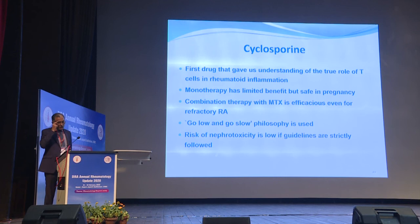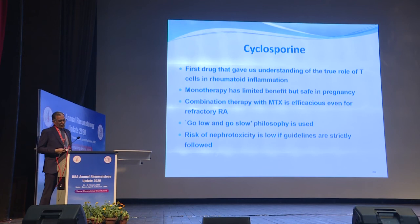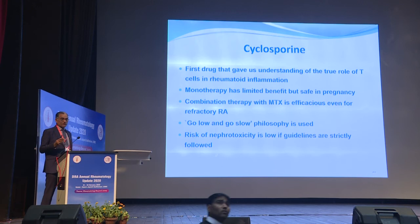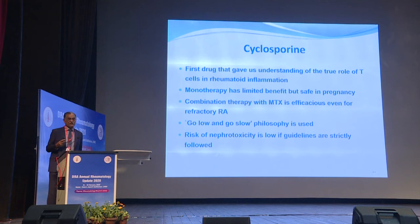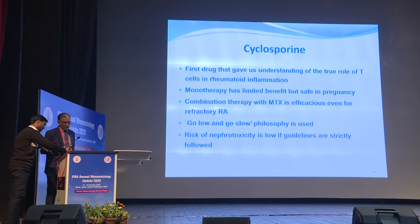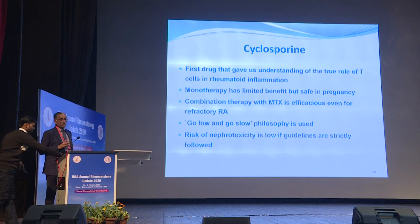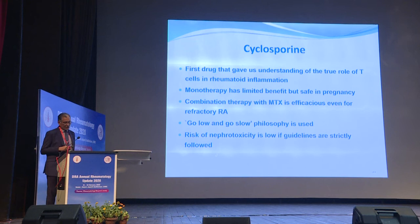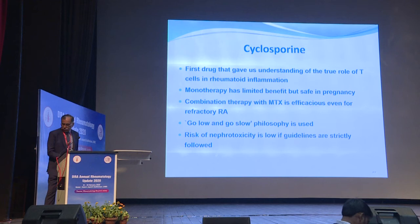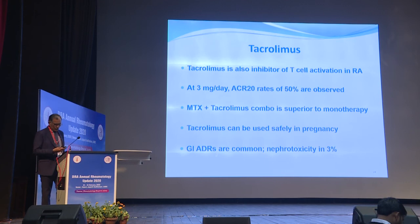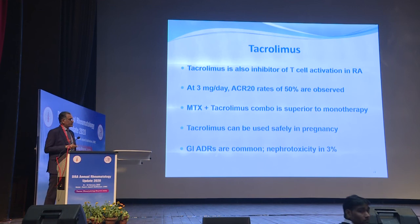Cyclosporine gave us our first understanding of what T-cells are doing in rheumatoid inflammation. Cyclosporine monotherapy has a limited role, but it is safe in pregnancy and can be given for short periods like during pregnancy. The combination of cyclosporine with methotrexate is efficacious even for resistant cases. A go-low, go-slow approach is important — don't start maximum dose from day one. The risk of nephrotoxicity is low if guidelines are followed; more than a 30% rise in serum creatinine from baseline is an indication to withdraw it.